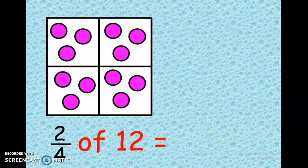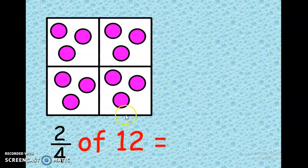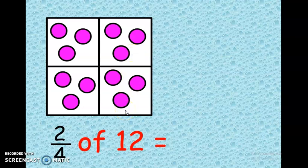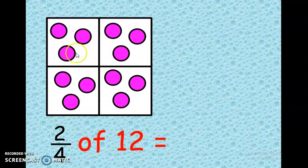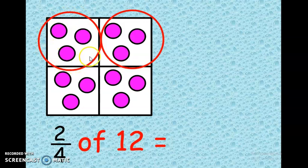What about when you're asked to find two quarters of 12? First, we divide the box into four parts, then we share one by one up to 12, counting 1, 2, 3, 4, 5, 6, 7, 8, 9, 10, 11, 12. You've been asked two quarters — look at the numerator, the number on the top, which is 2. So we are going to circle two of the four boxes — one, two.